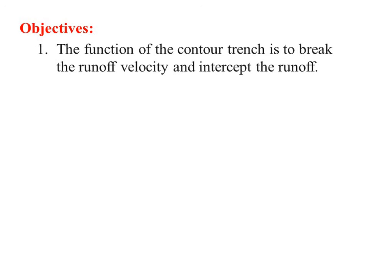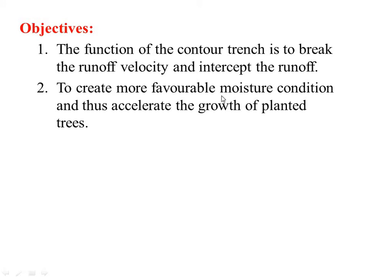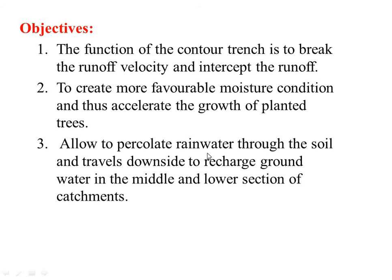Coming to the objectives, the function of the contour trench is to break the runoff velocity and intercept the runoff, to create more favorable moisture conditions and thus accelerate the growth of planted trees, and to allow rainwater to percolate through the soil and travel downside to recharge groundwater in the middle and lower section of the catchment.